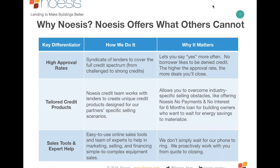Why Nuesis? A couple of key differentiators. Very high approval rates — we've built a lending stack that gets us around 80% approval, significantly higher than any other capital equipment leasing and exponentially higher than SBA loans or bank financing. It lets you say yes more often. We also have tailored credit products — proprietary products built for this industry and this equipment. We have something different for chillers and boilers versus lighting, and something different for munis versus commercial real estate.